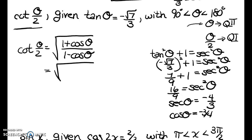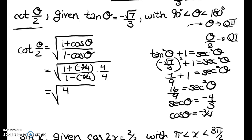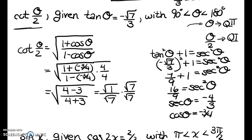Plugging negative 3 fourths into the formula: square root of 1 plus negative 3 fourths over 1 minus negative 3 fourths. To clear complex fractions, multiply by 4 over 4, giving the square root of 1 over 7. Rationalizing gives the square root of 7 over 7. That is the cotangent of theta over 2.